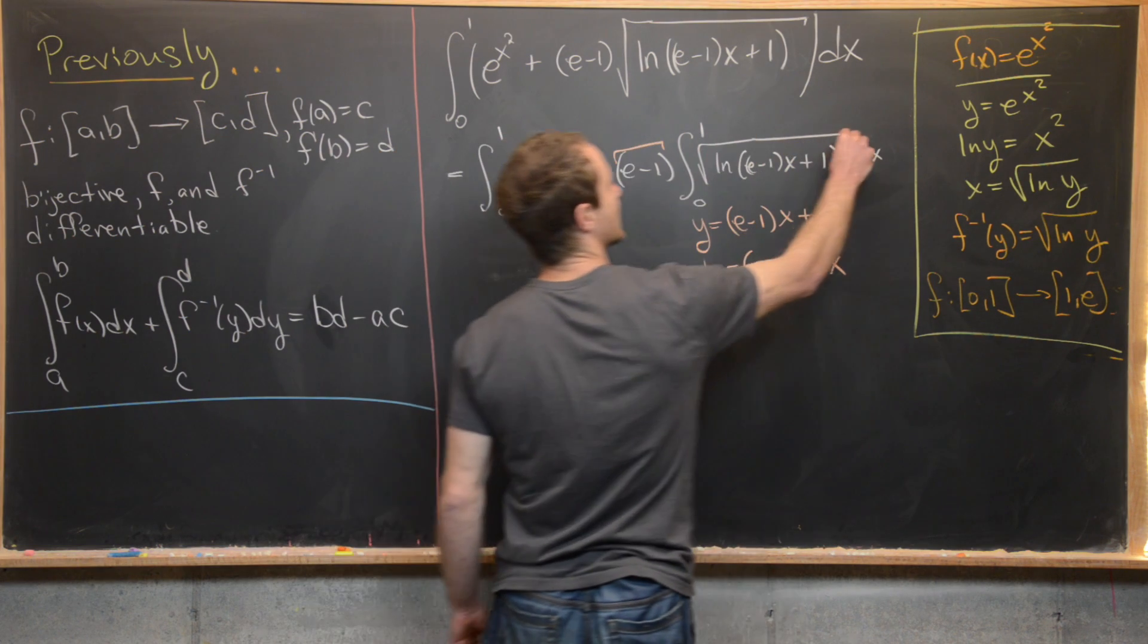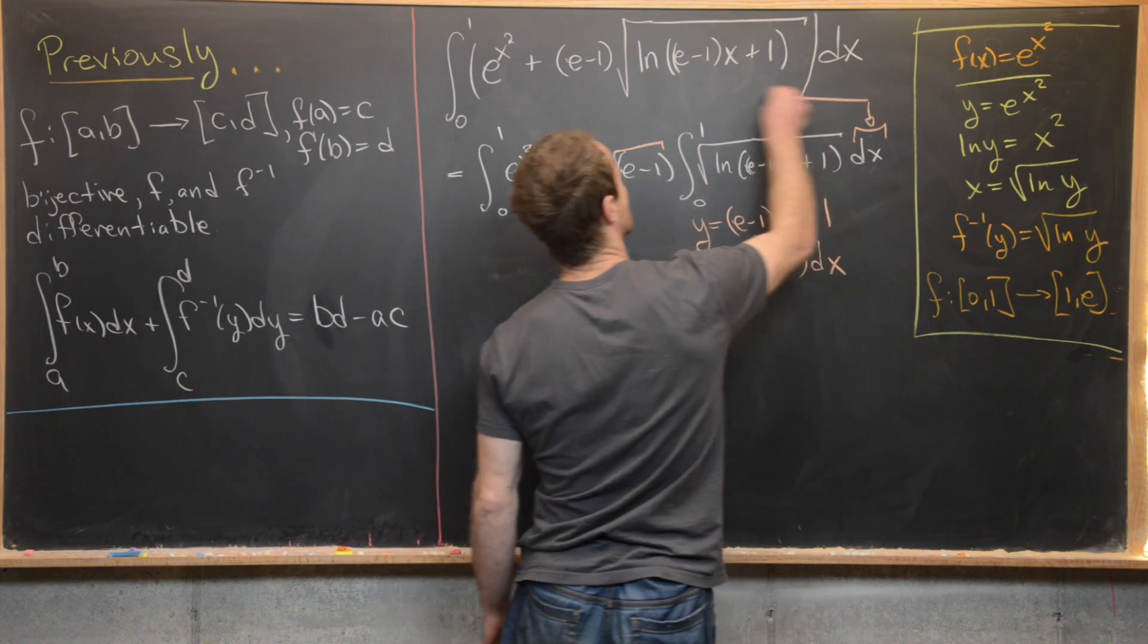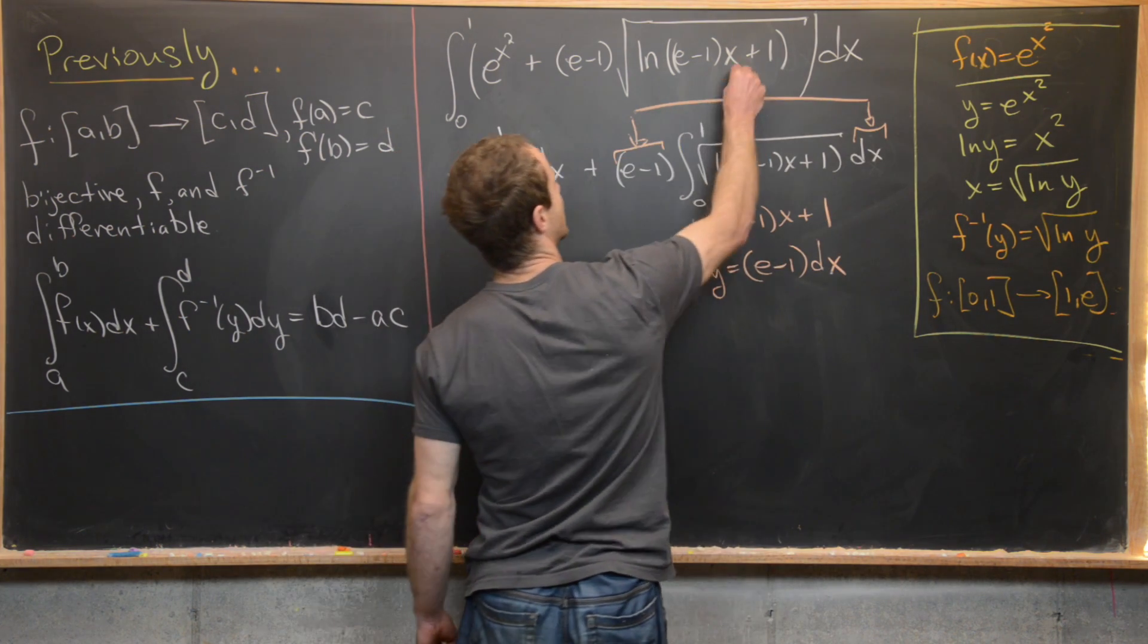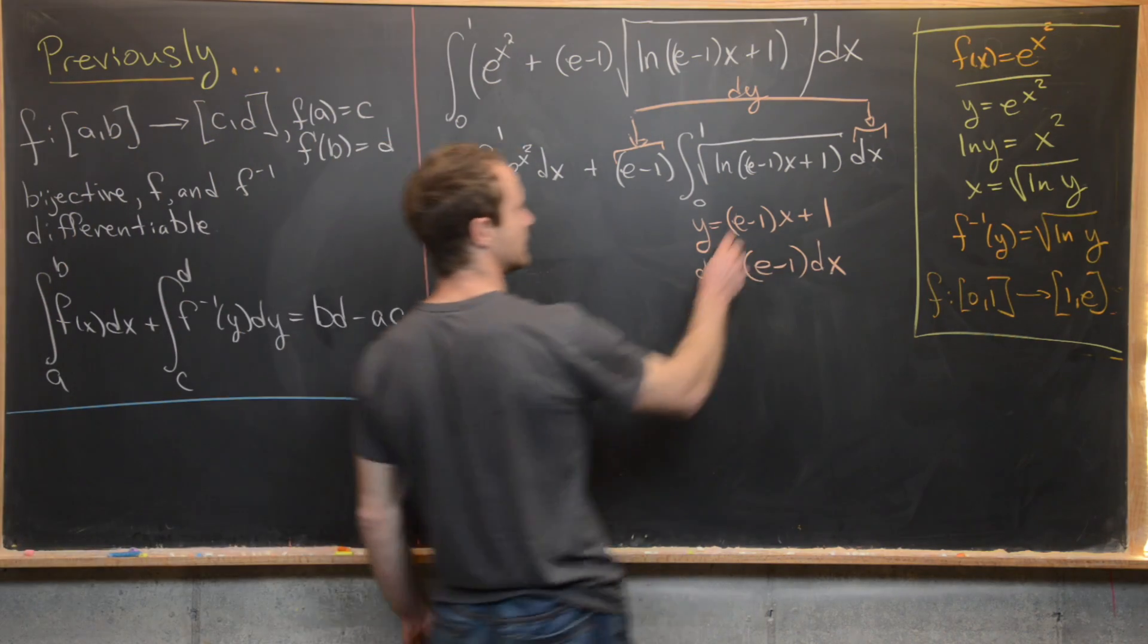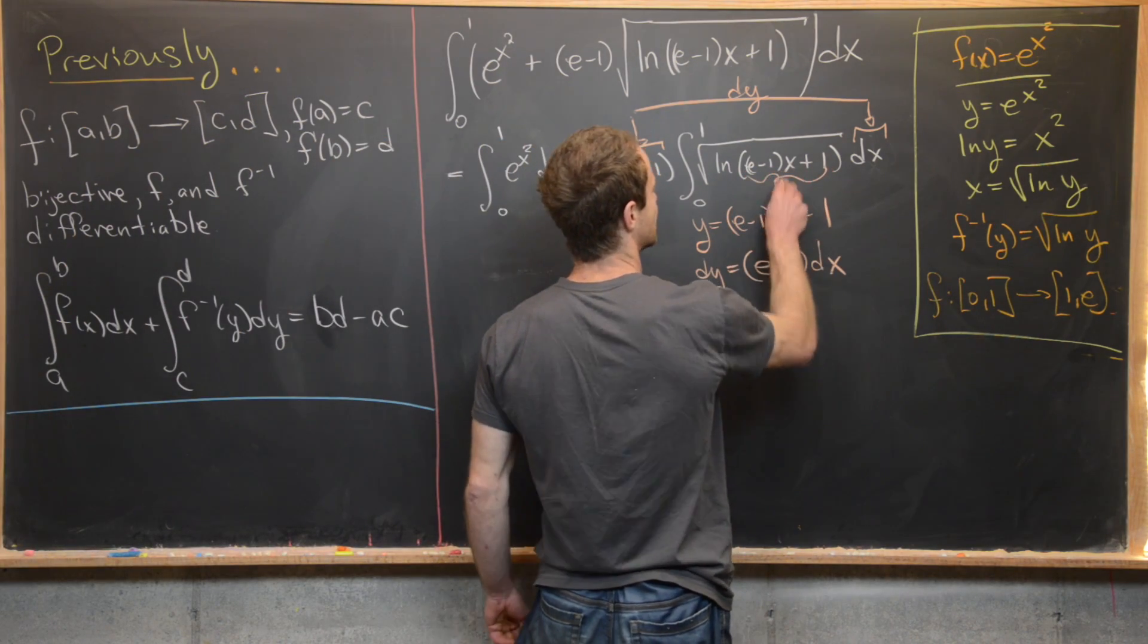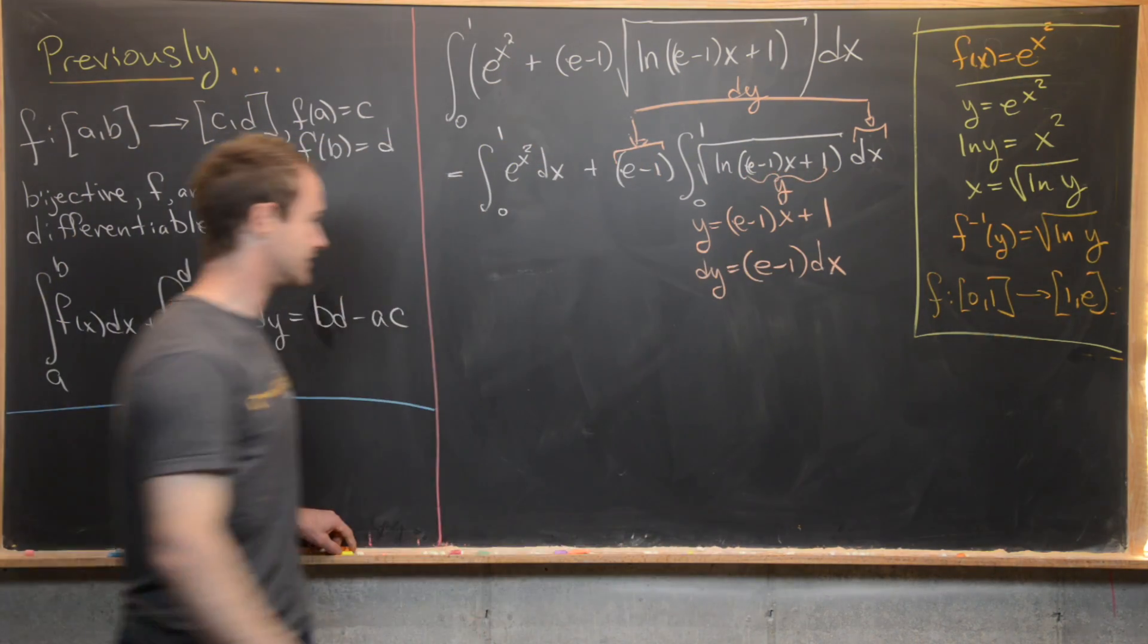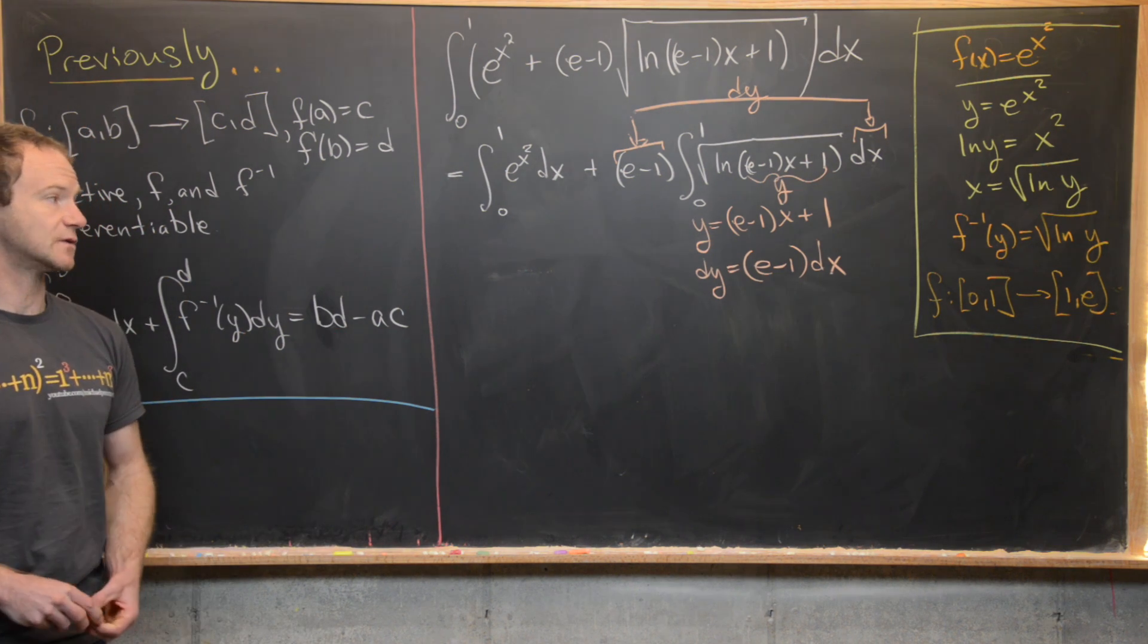And so we've got our dy earmuffs around our integrand here. So that's good news. And then we have all of this stuff inside of the natural log, which is inside of the square root, is y.